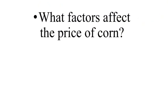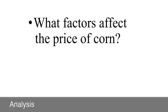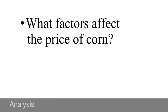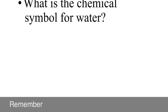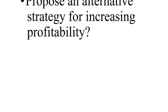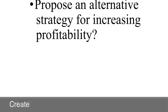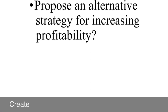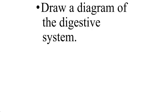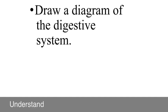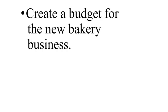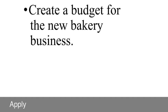Alright, let's see how you did. 'What factors affect the price of corn?' That's an analysis question — be able to identify the parts that make up the complex whole of the corn market. 'What is the chemical symbol for water?' That's a remember question — can you recall the basic fact of water's chemical symbol? 'Propose an alternative strategy for increasing profitability.' This is a prompt to create — to take everything you know about the business in question and do something pretty complex with that information. 'Create a budget for the new bakery business.' This is an application question — it's asking you to take what you know about the bakery business and solve a particular problem. I know it's a bit tricky with that word 'create' right up there in the prompt.